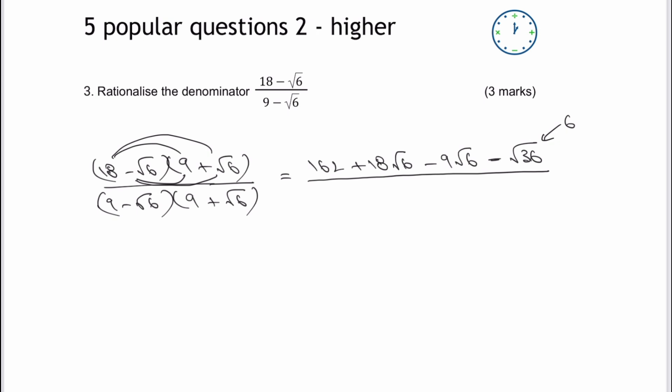So let's look at the denominator. A little bit easier. I've got nine times nine, which is going to be 81. And then I've got plus nine root six minus nine root six. So basically, those two will cancel themselves out. And then as before, I've got minus times a positive, and that's going to give me negative root 36, which again, we've said is six.